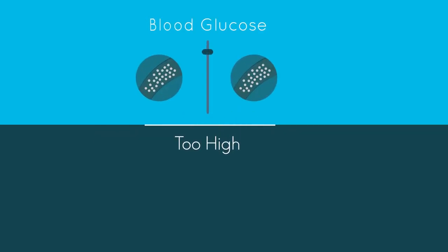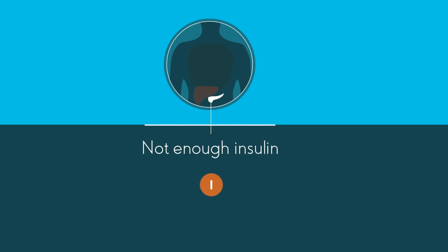Diabetes is a condition where levels of blood glucose are too high, because the body cannot use it properly. This could be because the pancreas doesn't produce enough or any insulin, or the insulin is not working properly.